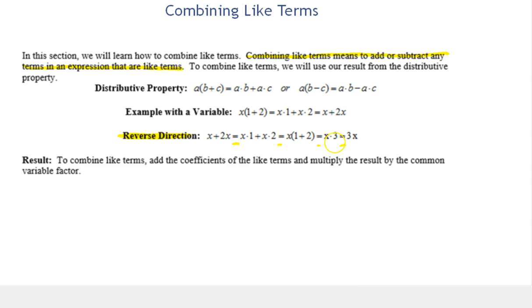Adding 1 plus 2 gives us 3, so we have x times 3, written as 3x — the 3 and x next to each other imply multiplication. The general result: because of the distributive property, to combine like terms, we just add the coefficients of the like terms — in this case 1 and 2 — and multiply by the common variable factor, in this case x. So 1 plus 2 is 3, multiplied by x. Let's look at some examples.